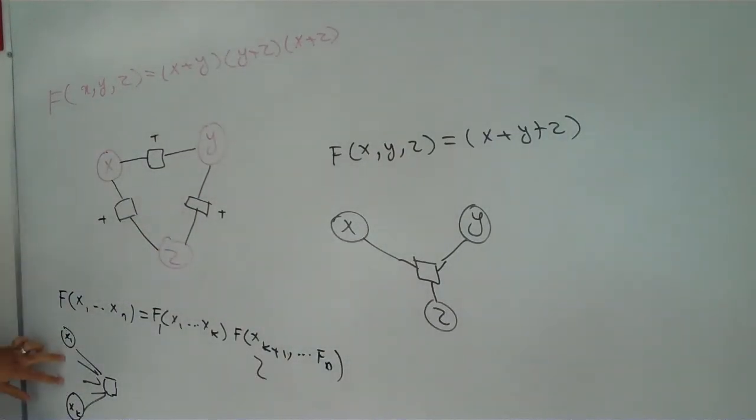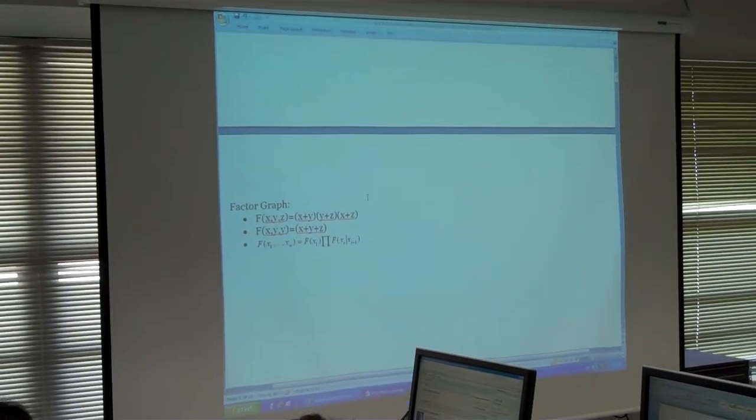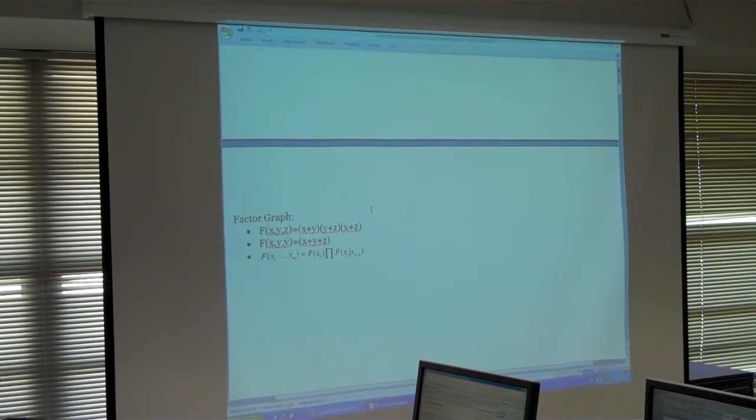And the last one is a Markov chain that said each station, each state like X1 to XN is dependent on the previous state and the representation of...